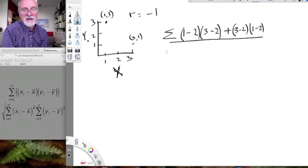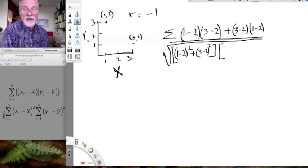3 minus 2 times 1 minus 2. Alright, and we already know what the denominator is going to be. Oh, let's go ahead and do it, right. We can do that, alright. So it's going to be x1 minus x squared, so 1 minus 2 quantity squared plus we have x2, 3 minus 2 quantity squared, and that all is multiplied by this summation. The first one here, y1, 3 minus 2 quantity squared, plus y2, 1 minus 2 quantity squared.